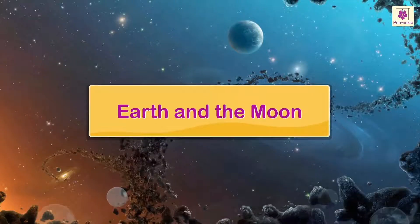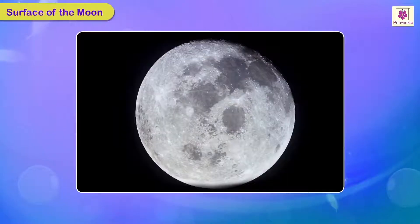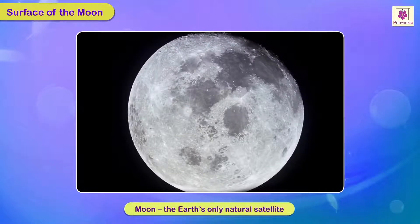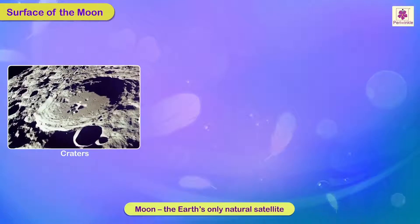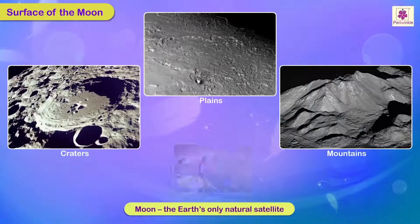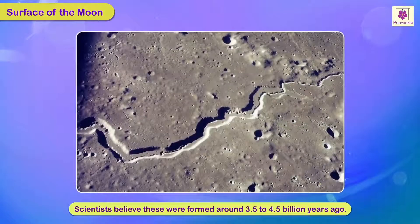Earth and the Moon. The surface of the Moon — Earth's only natural satellite — has many craters, plains, mountains, and valleys. Scientists believe these were formed around 3.5 to 4.5 billion years ago.